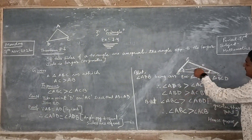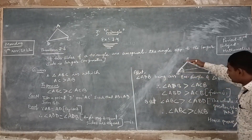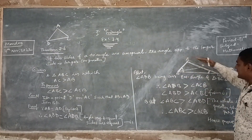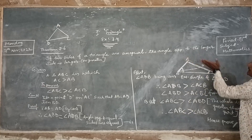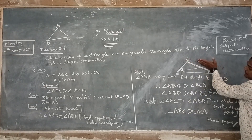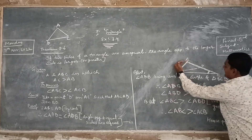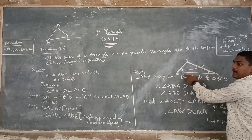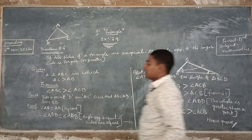Why is angle B the greater angle? Because it is opposite to the longer side of this triangle, that is AC. AC is the longer side. So this is the longer side. Let us start proving this.